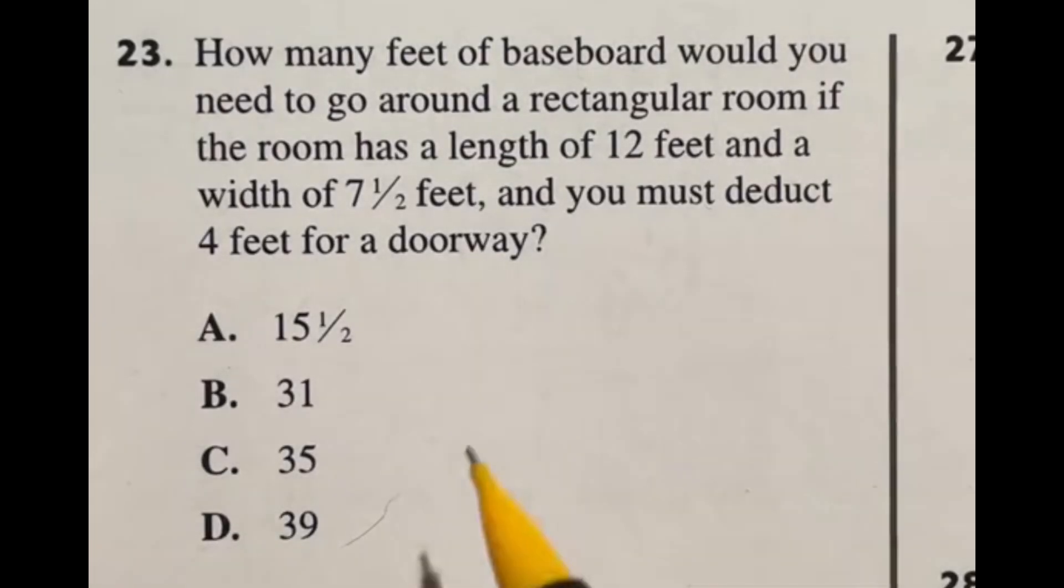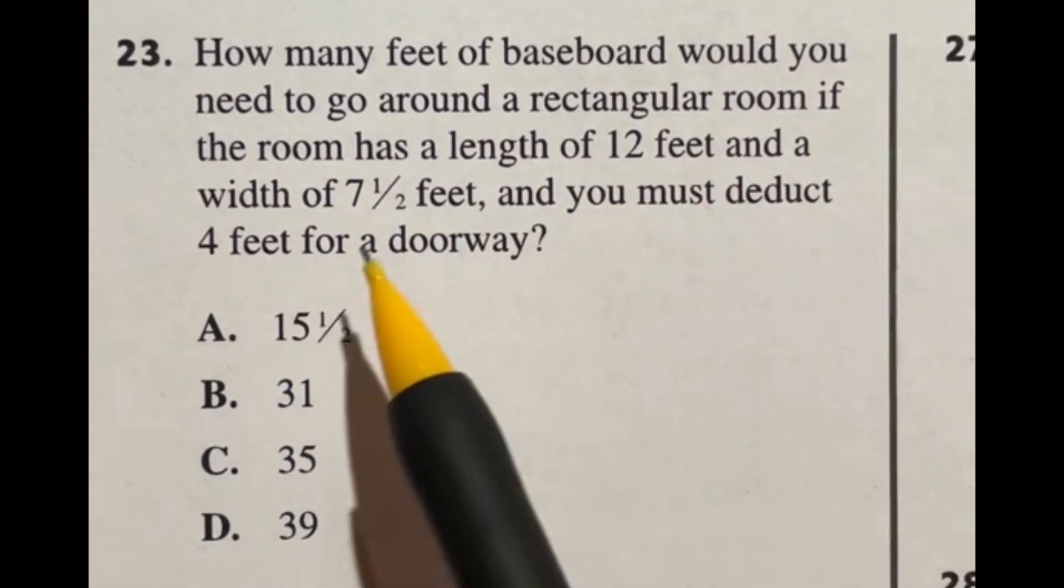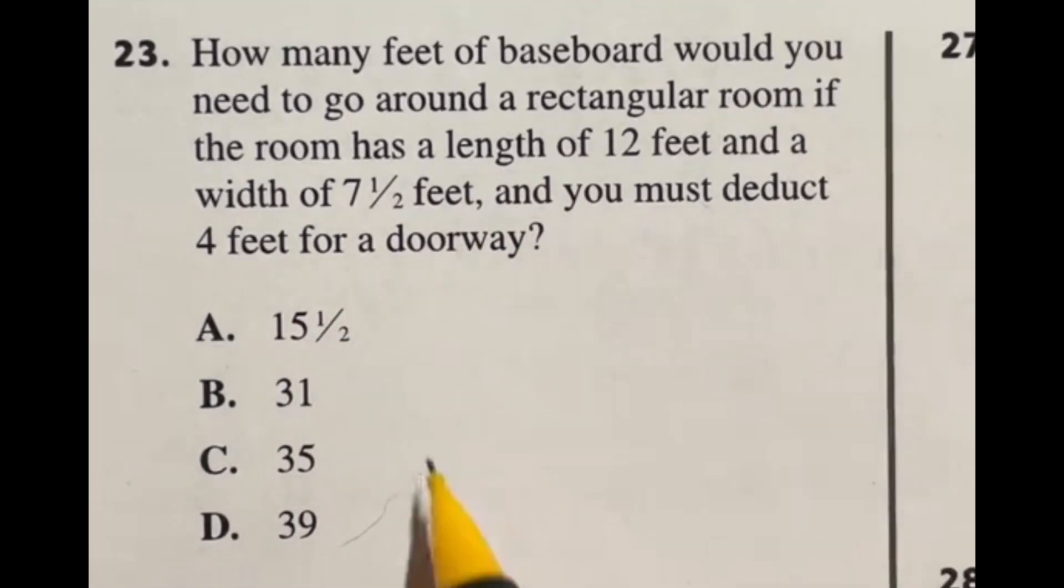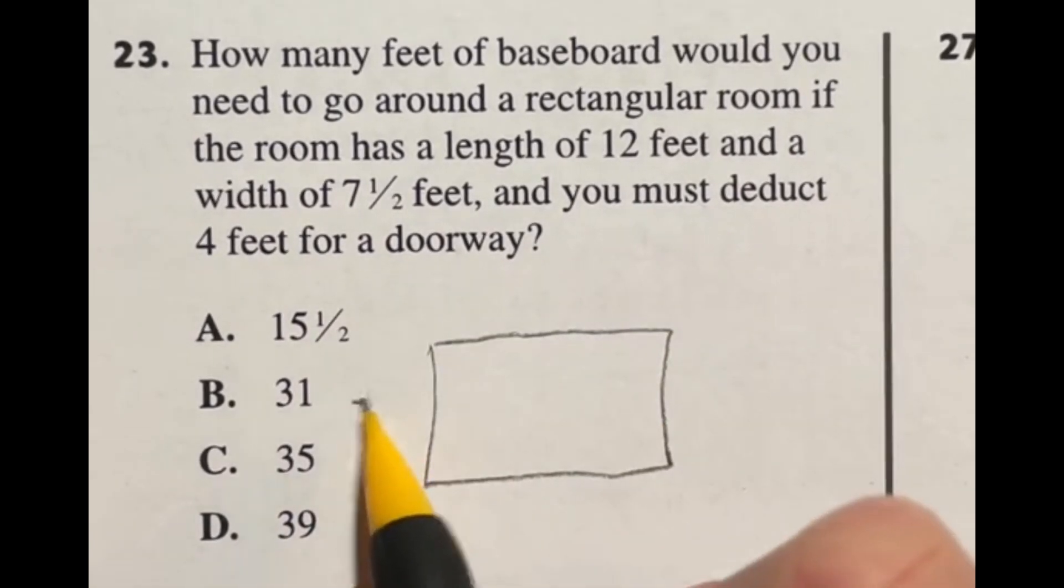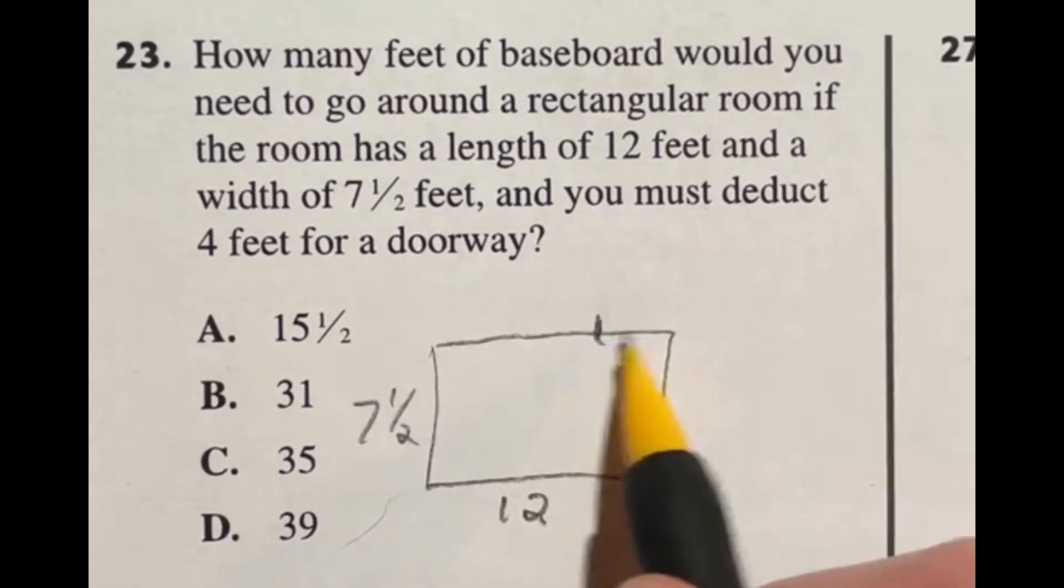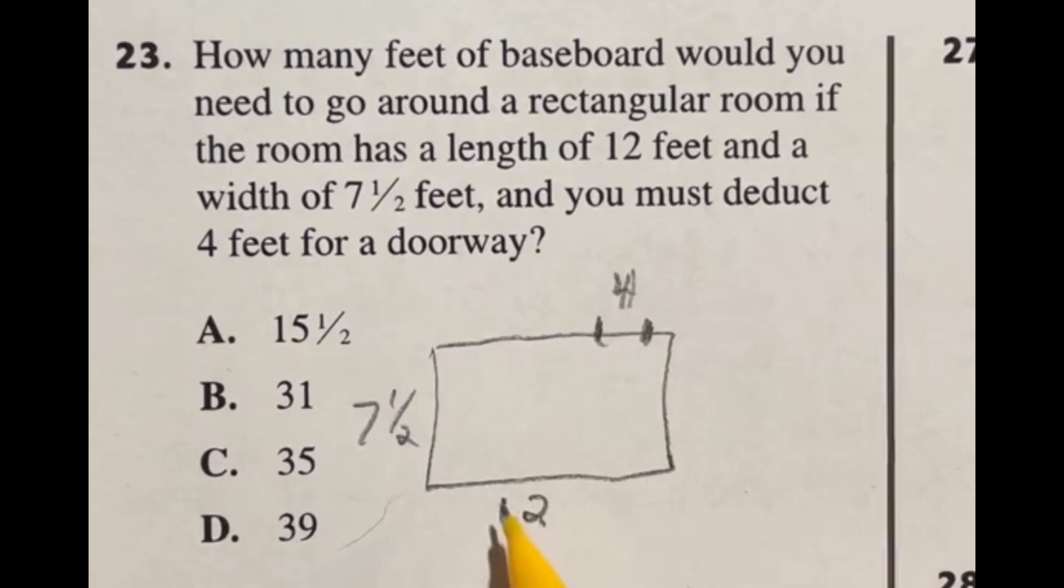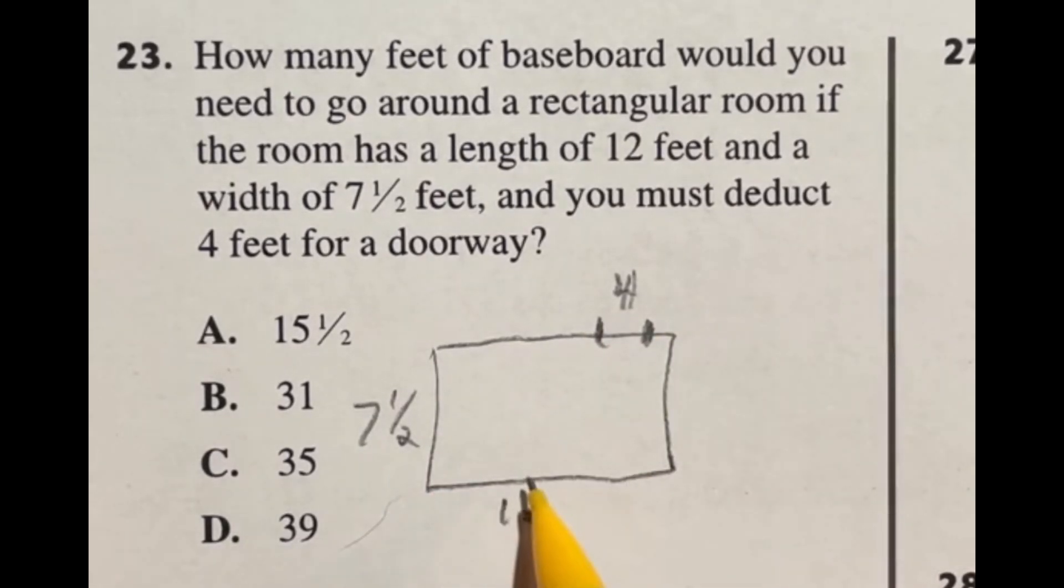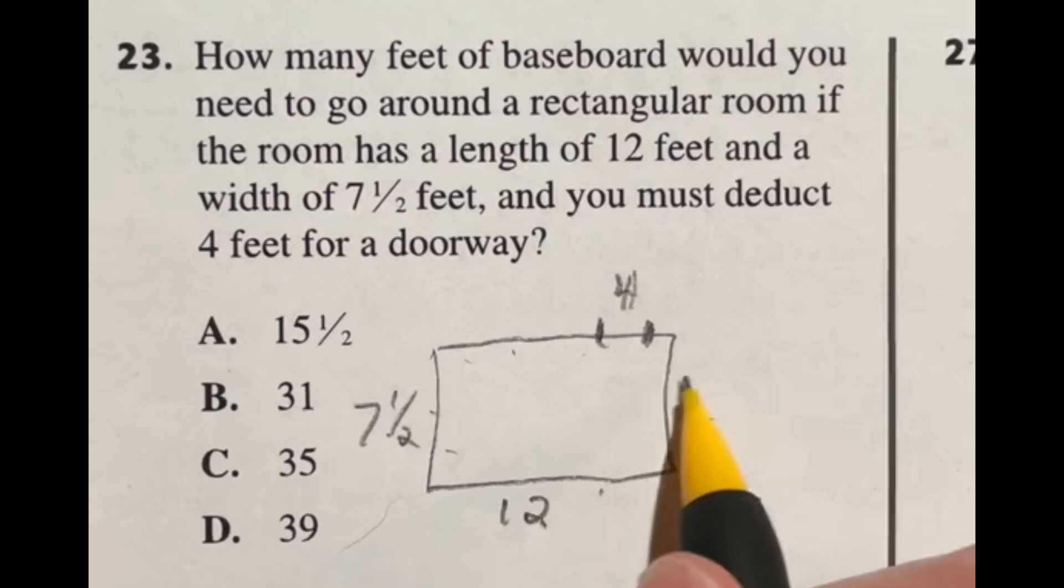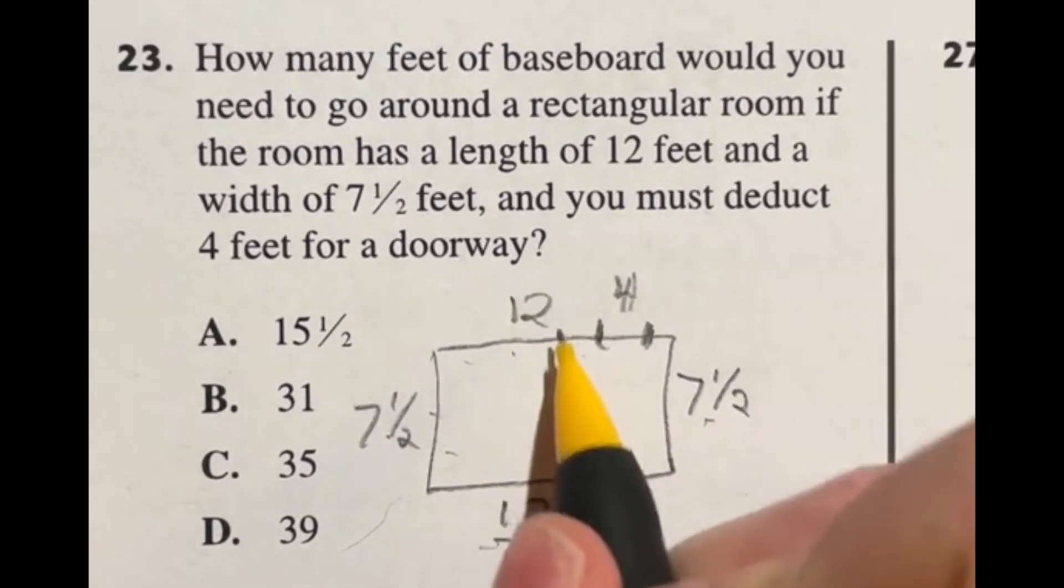How many feet of baseboard would you need to go around a rectangular room if the room has a length of 12 feet and a width of 7.5 feet and you must deduct 4 feet for a doorway? So we're looking at a room here, we got 7.5 over here, we got 12 feet on the long side, and at some point there's a door that's got 4 feet that we got to take care of. When we are looking around the outside of a rectangle that's our perimeter, you get that by adding up all the side lengths. So that means we have 7.5 here, another 7.5 here, 12 down here and another 12 up here.